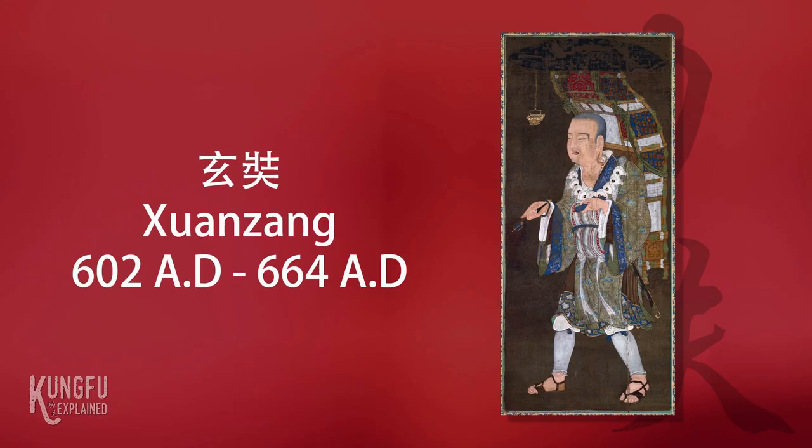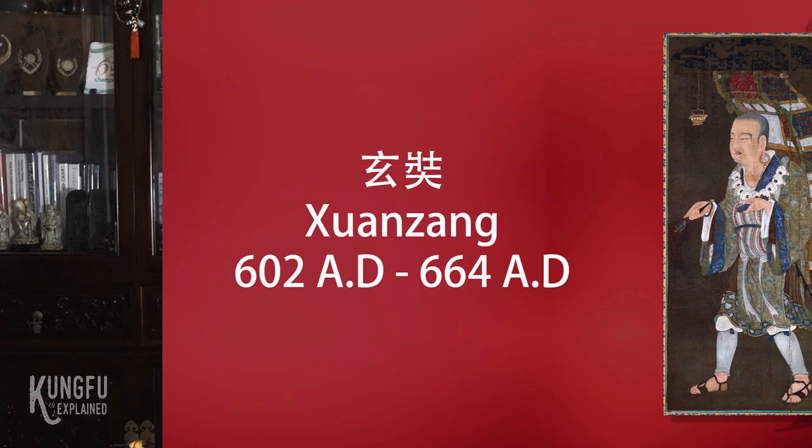Welcome to this episode of Kung Fu Explained. We are continuing in the Shaolin Legacy series, and this is the fourth episode. The last episode focused on key events of the Tang Dynasty, including the endeavors of the monk Shenzang and his travels to India, and how that became connected to the famous tale of Journey to the West, the Monkey King, and its representation in popular culture and martial arts. Now we will move forward in the timeline from the Song Dynasty onwards.